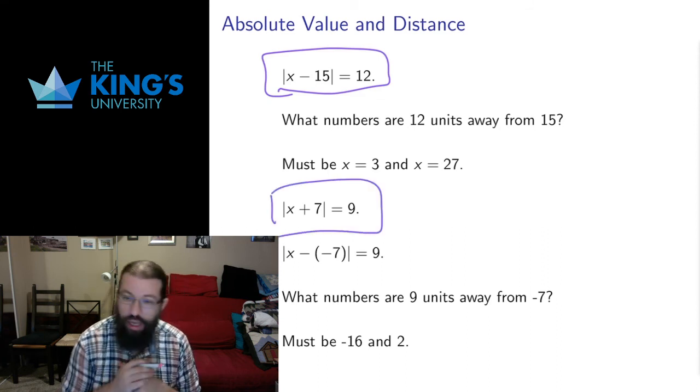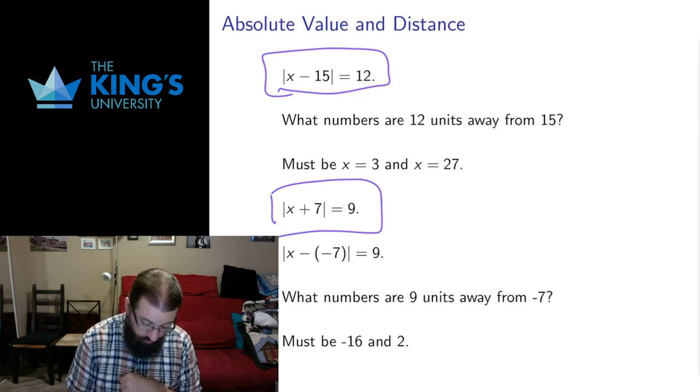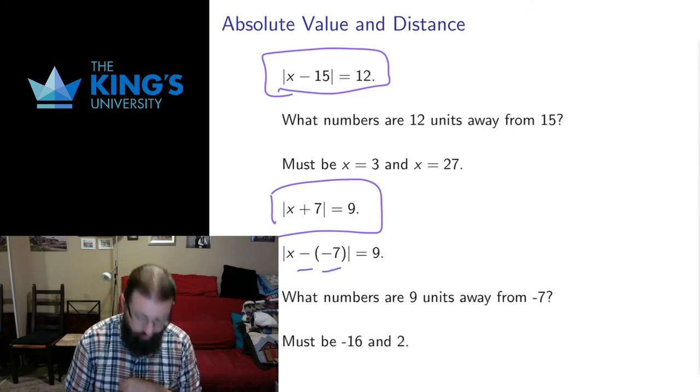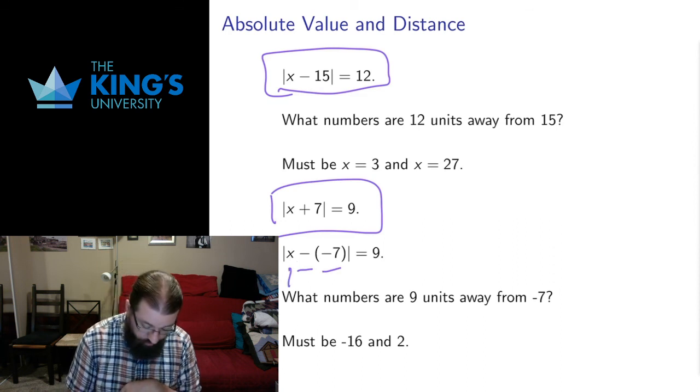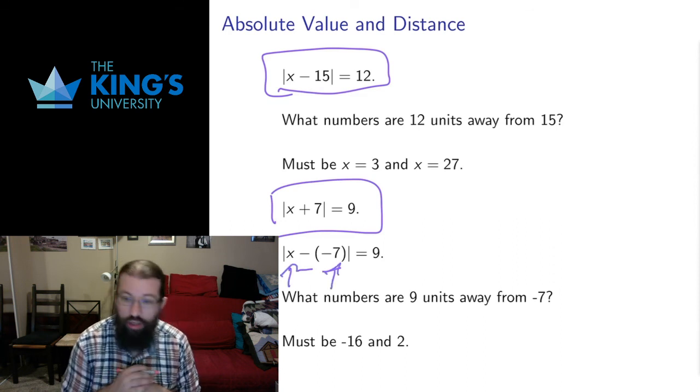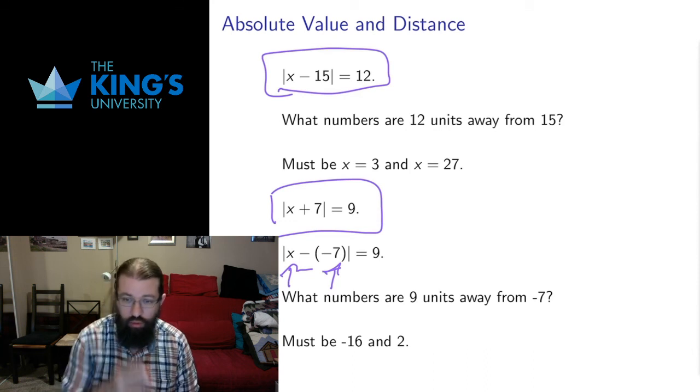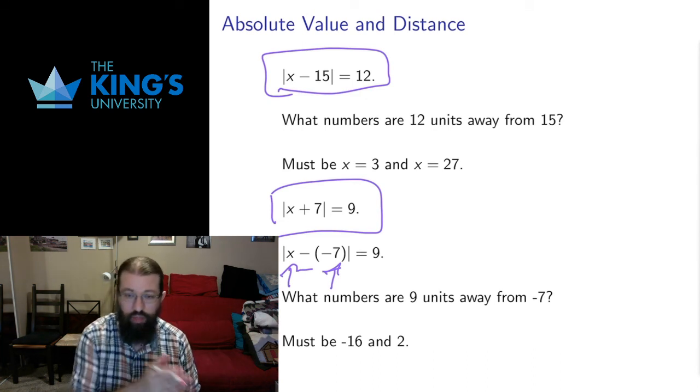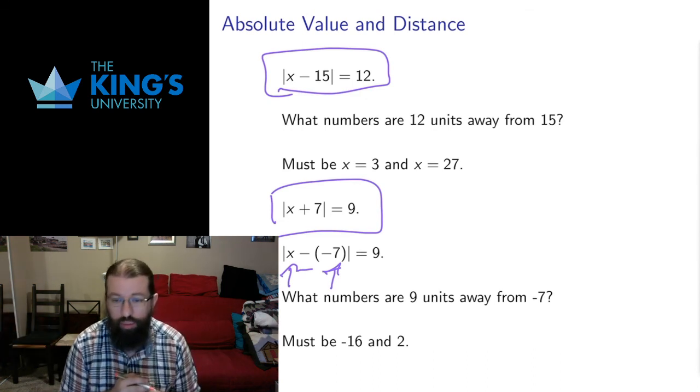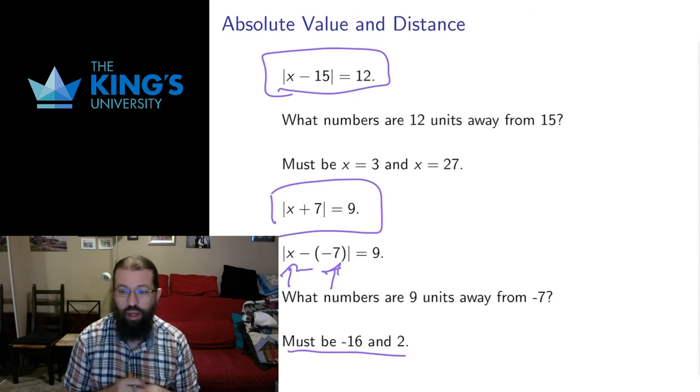And I can even do this with positive numbers by thinking positive numbers as subtracting the negative. So if I have the equation absolute value of x plus 7 equals 9, I can write this as the absolute value of x minus negative 7. Minus the negative is positive. So now this is the distance between x and negative 7. So what numbers are 9 units away from negative 7? Well, negative 7, if I go 9 units to the negative side, I get negative 16. If I go 9 units up, I get positive 2. So my answer must be negative 16 and 2.